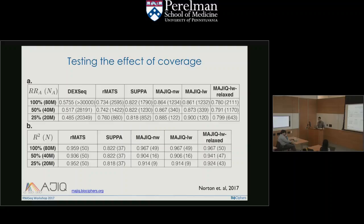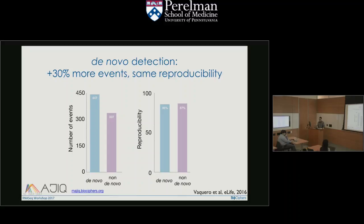Novel detection is very important. Using novel detection in mouse transcriptome — and human as well — we see a 30% increase in differentially spliced events detection, and reproducibility basically stays flat. That means the novel, unannotated stuff is very real and very reproducible, with validations by RT-PCR in the paper. The vast majority of algorithms out there don't give you novel detection, so they'll miss complex variations and the novel variations.